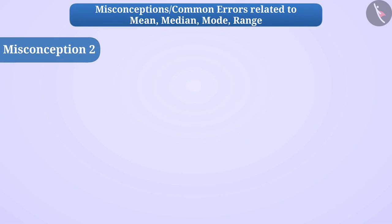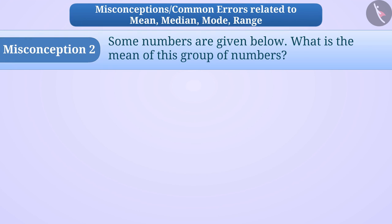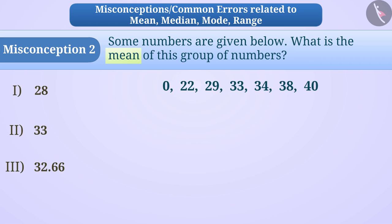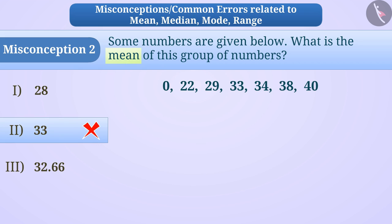Misconception 2. Some numbers are given below. What is the mean of this group of numbers? Because of the confusion between the mean and the median, children think that mean is the middle number of the series of numbers, that is, 33, which is option 2. But this answer will be incorrect.